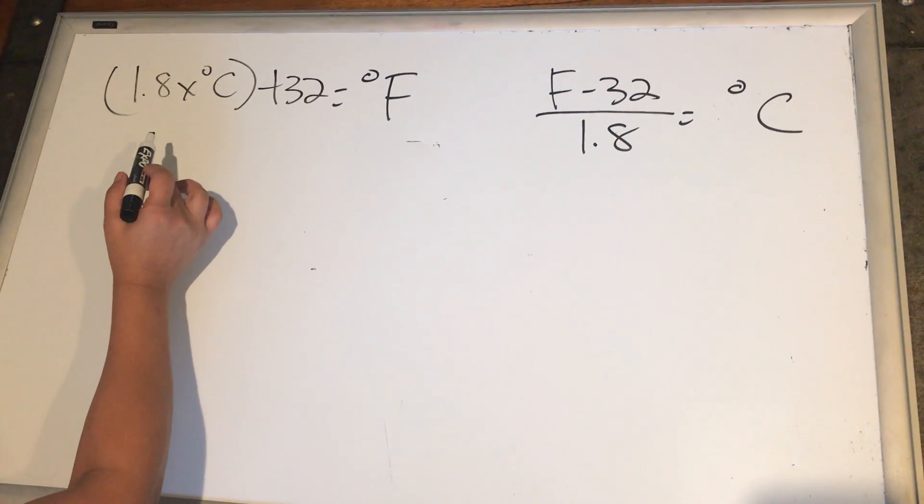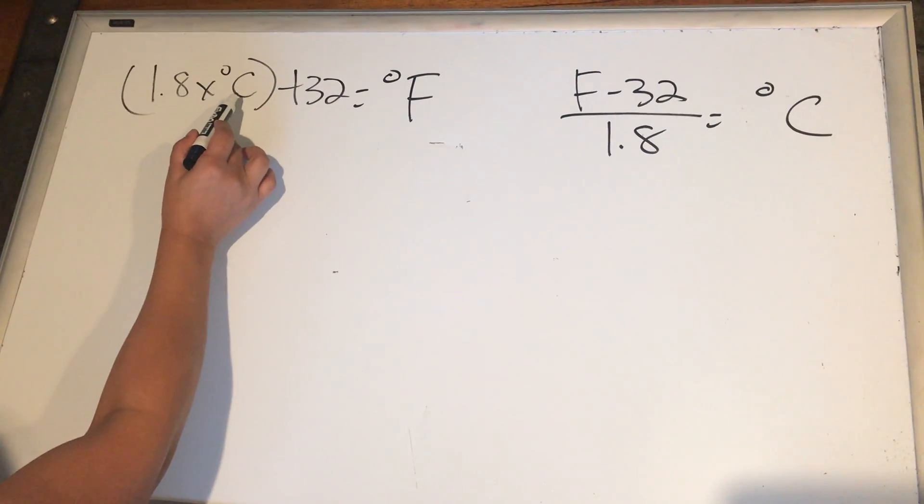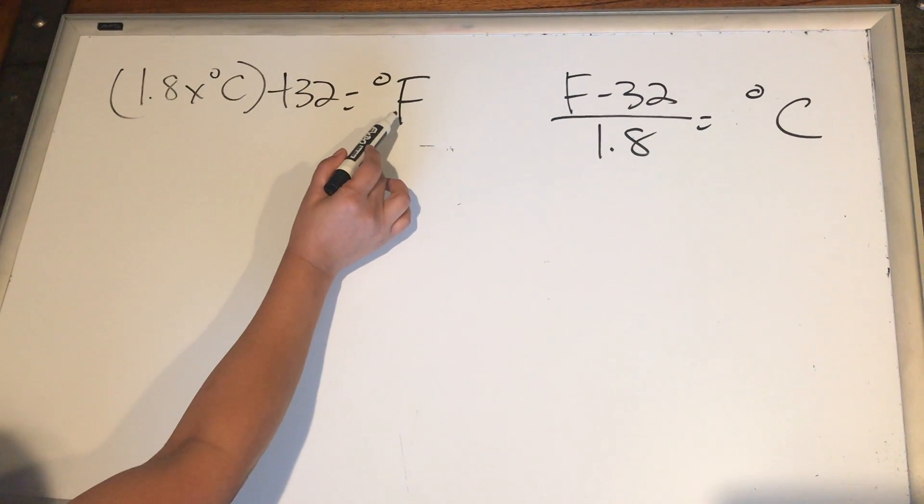This is the formula for Fahrenheit and Celsius. So 1.8 times the Celsius plus 32 equals Fahrenheit.